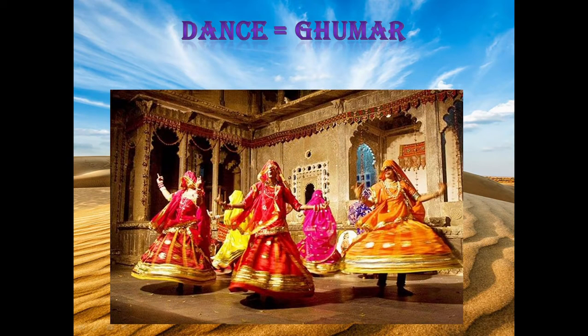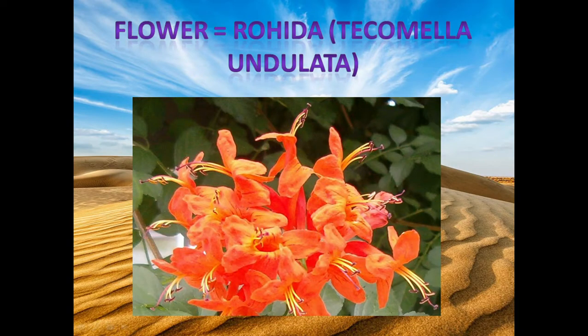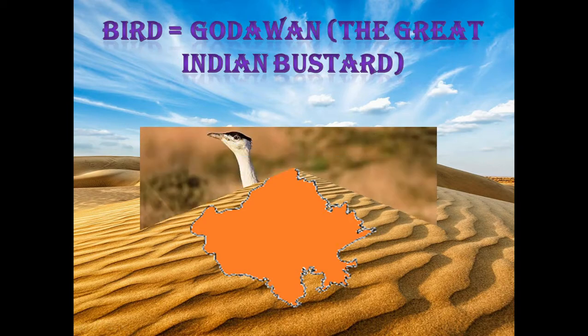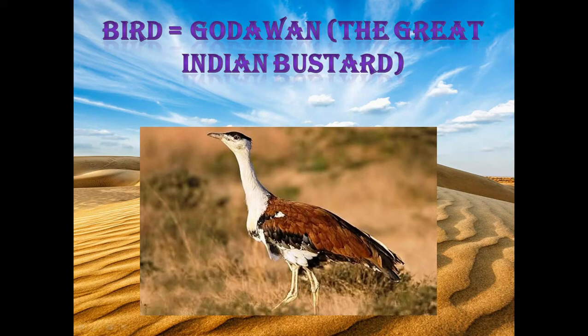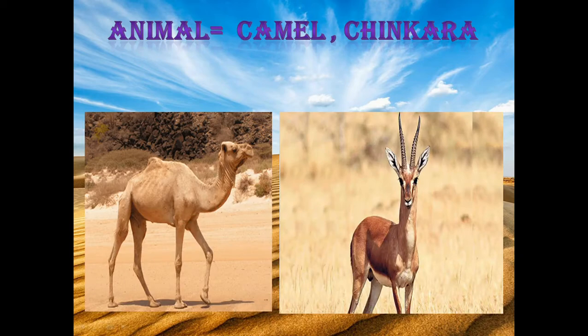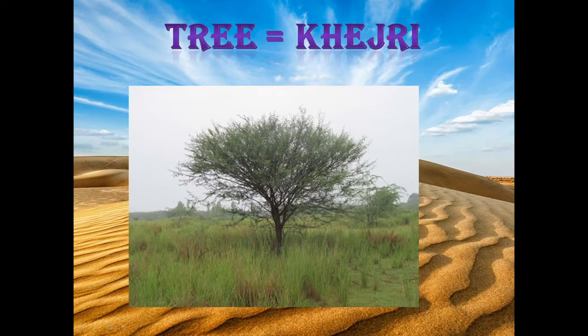The state dance of Rajasthan is Ghoomar. The state flower is Rohida. The state song is 'Kesariya Balam Padharo Mhare Des'. The state bird is Godawan, the Great Indian Bustard. The state animal is the Camel and Chinkara. The state tree is Khejdi.